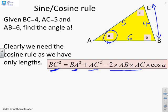So now all I need to do is put in all the numbers. So BC squared, I've got 16 equals AB squared, which is 36, plus AC squared, which is 25, minus 2 times 6 times 5 times cos A.